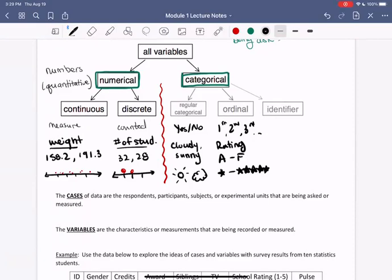And then we also have something called an identifier, which often isn't even considered a category or numerical. It's just sort of a variable on its own, but it helps us to identify the data that we've collected. So the thing about identifier, an identifier, is that it's unique to each case.